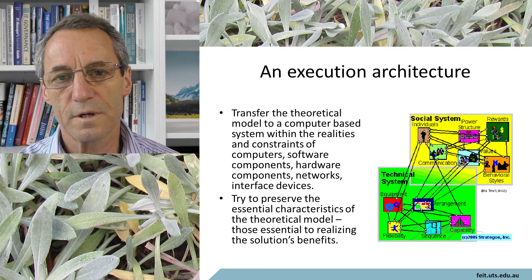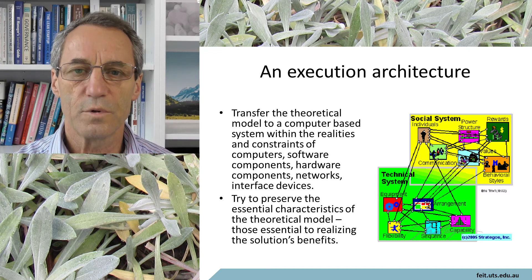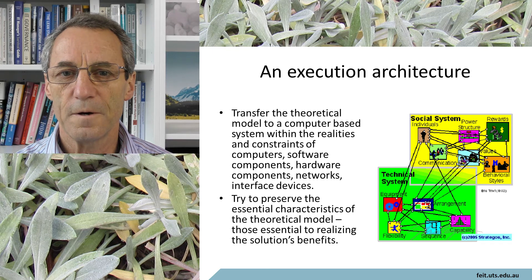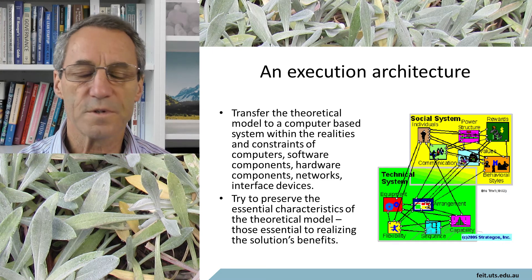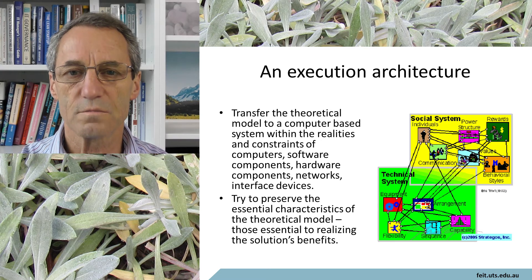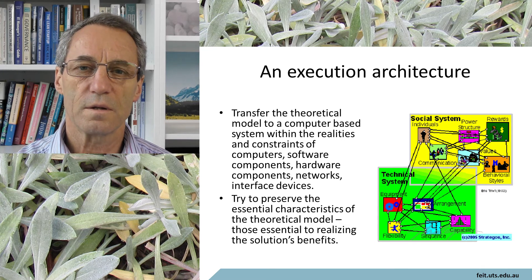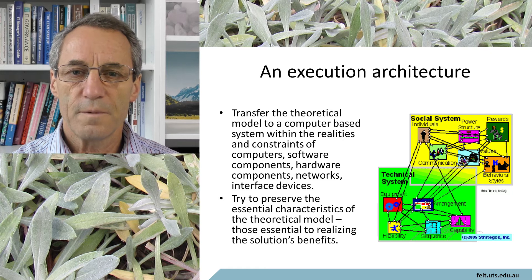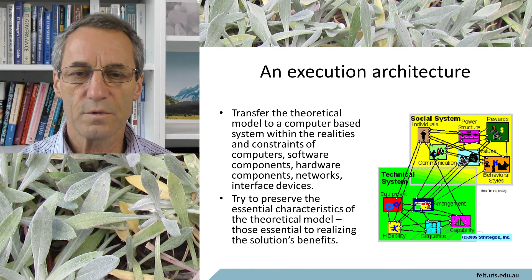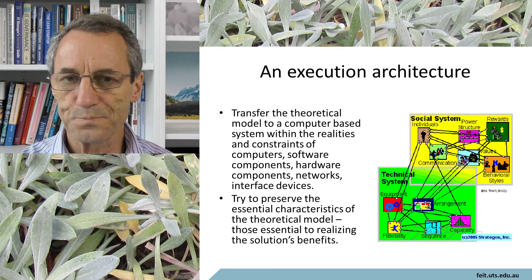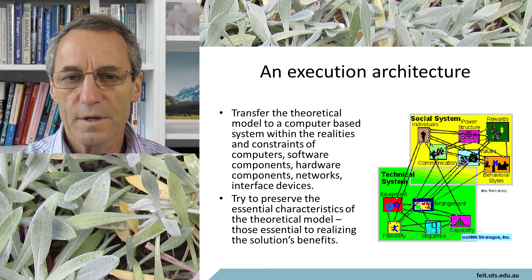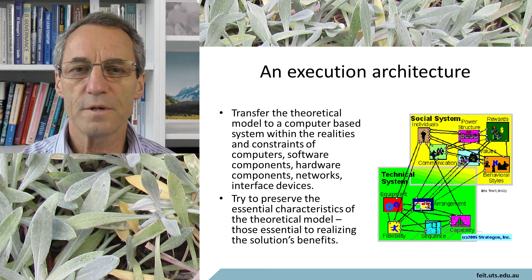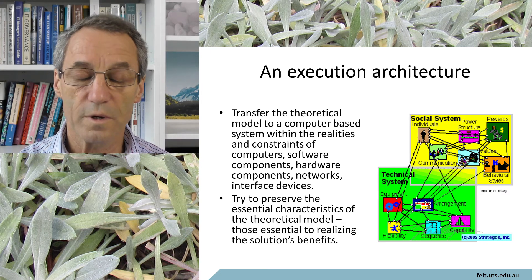Part of the job of an execution architecture is to transfer that theoretical model into a real computer system, with the things it enables and the things it restricts. For example, you have to start differentiating between users — things outside the system — and their interface into the system. We also have to consider practicalities like simultaneous data access, serving large numbers of users, performance considerations, and control and coordination within the system.